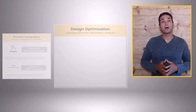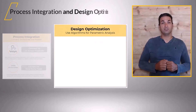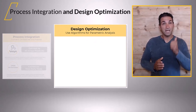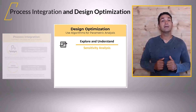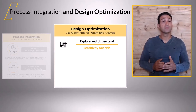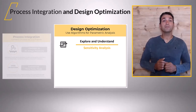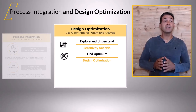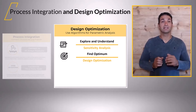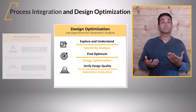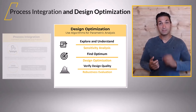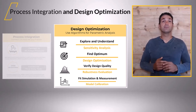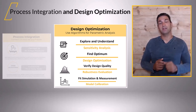The second part of PIDO is design optimization, which aims to better understand your design and different options. Learn how to optimize your product, find an improved design that has the desired quality, is robust against perturbations, and fit simulation and measurement data.